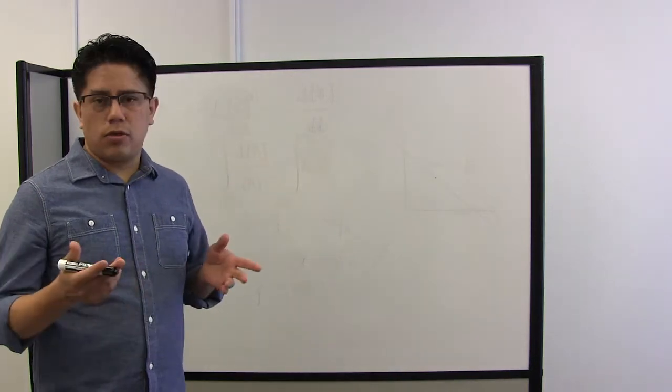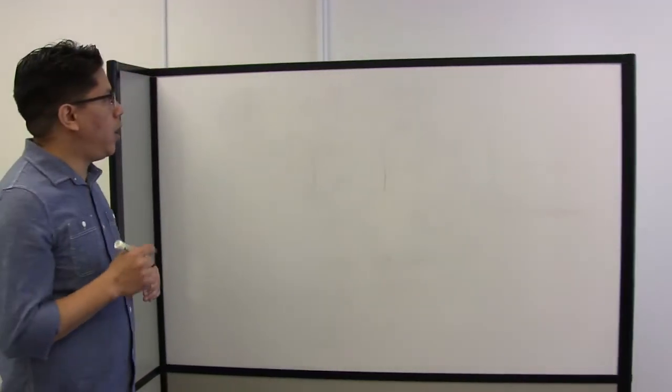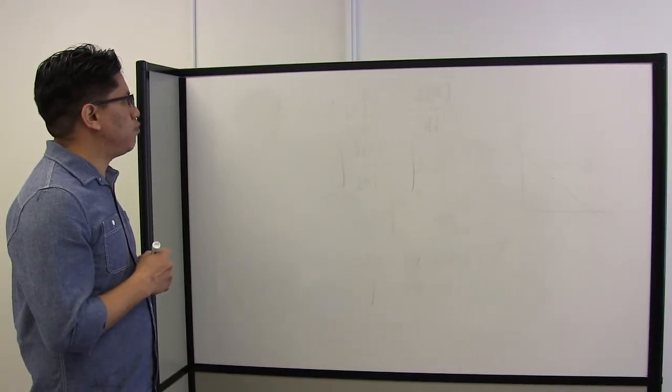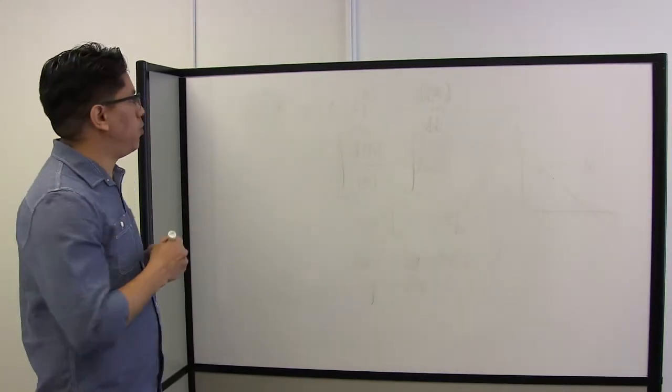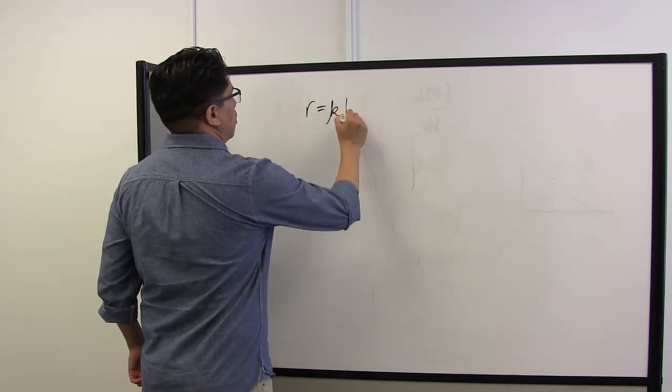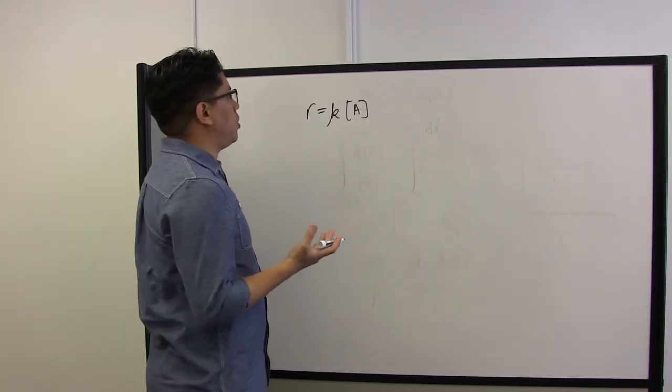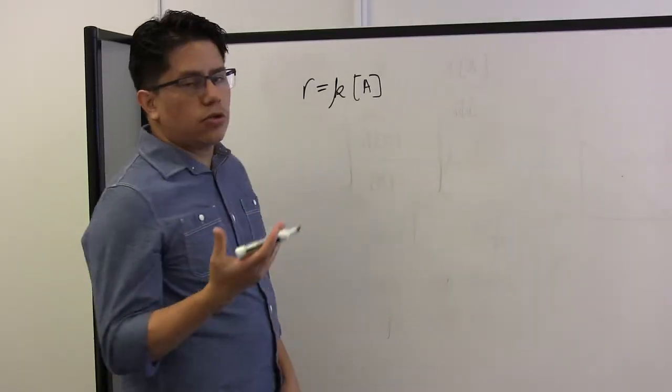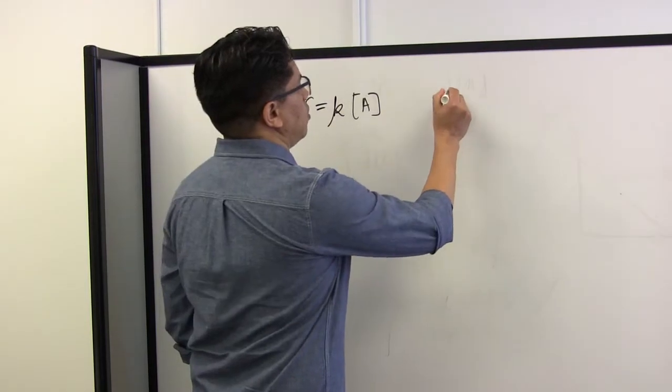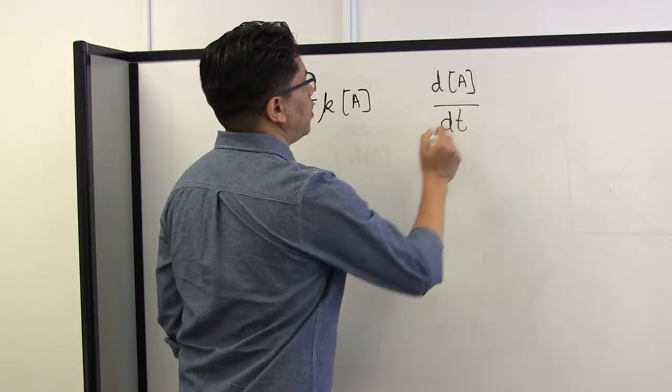All right, so let's dive into it. For determining concentration, remember that we have to define the rate of reaction. The rate of reaction is defined as kinetic constant times the concentration of the compound that I'm interested in.